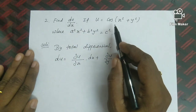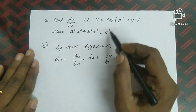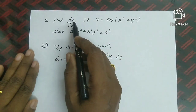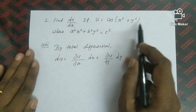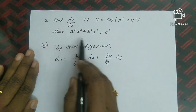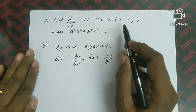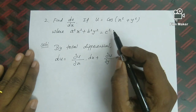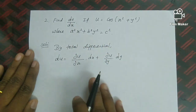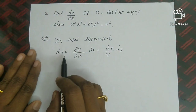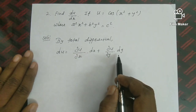In this question, du/dx is asked. We are given u and another equation. We use both together to find du/dx. By the total differential method, we form the total differential coefficient relationship and use it to find du/dx; at the same time we will use dy/dx from the second equation.